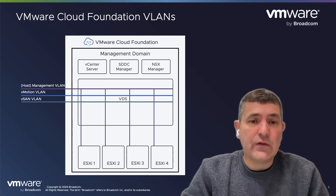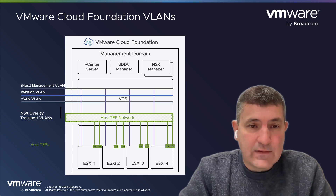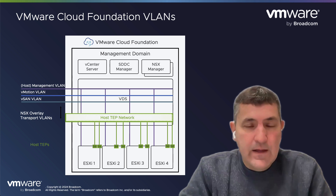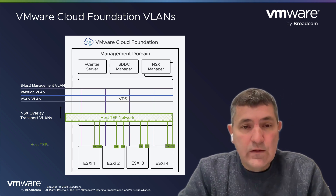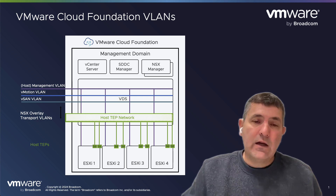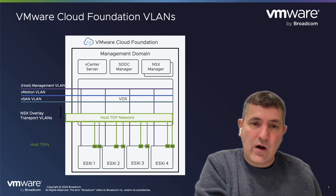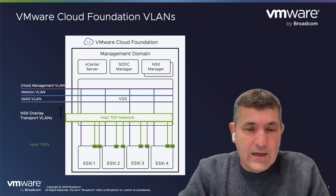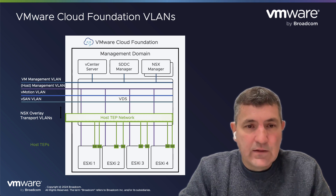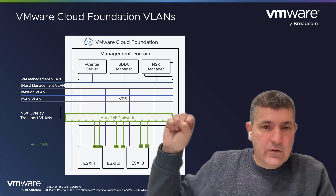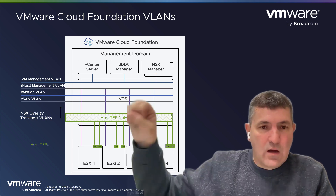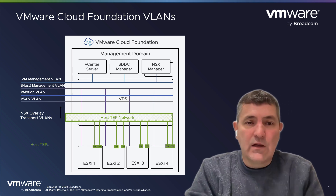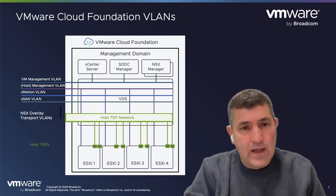Then you introduce the overlay network that comes with NSX, and we need an overlay network for the hosts to communicate on — so that's another VLAN. New in Cloud Foundation 5.1, we introduced a separation between the management VLAN for the hosts and the management VLAN for the VMs that run on those hosts. We introduced a second management VLAN called the VM management VLAN. NSX managers and the SDDC Manager will talk on the VM management VLAN, while all the hosts talk on the management VLAN — a separation requested by customers.